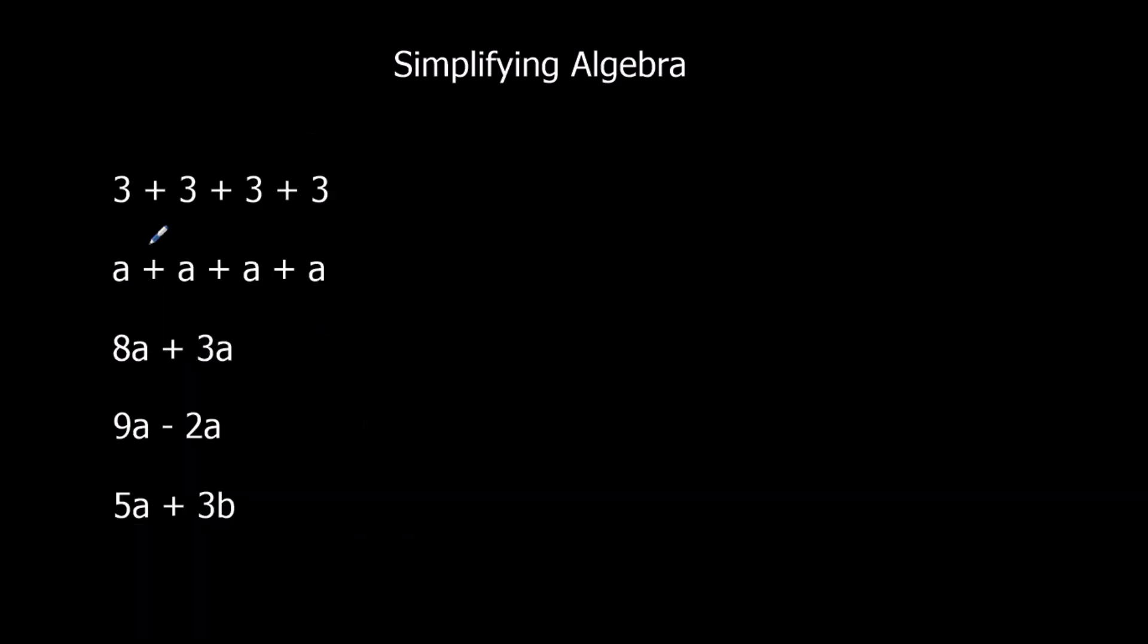Okay, so this is addition. We've got 3 plus 3, plus 3, plus 3. Now the answer is 12, but what I've put this on there to show you is this is 4 times 3. We've got 4 lots of 3. So I'm going to write it as 4 bracket 3. That means 4 times 3.